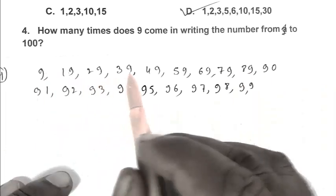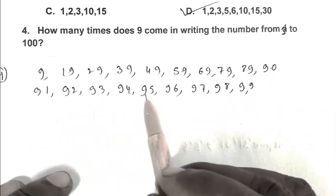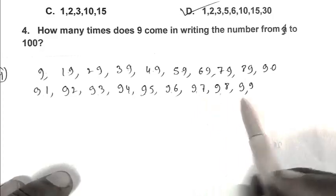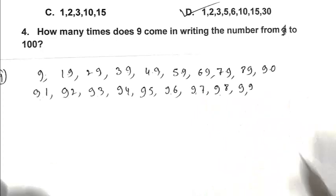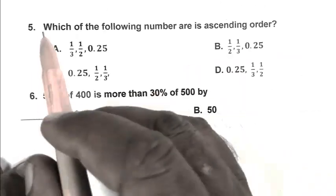Counting all occurrences: 1, 2, 3, 4, 5, 6, 7, 8, 9, 10, 11, 12, 13, 14, 15, 16, 17, 18, 19, 20. There are 20 nines. So B is the right answer.